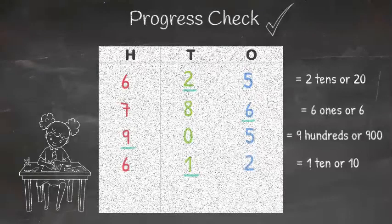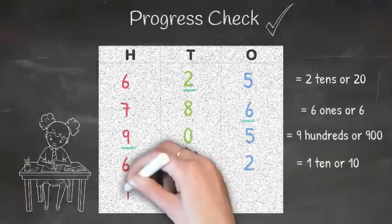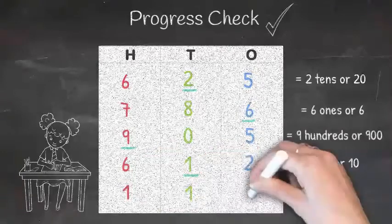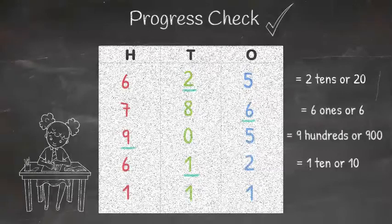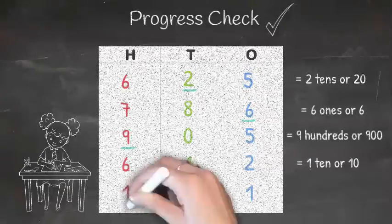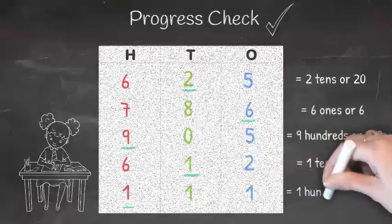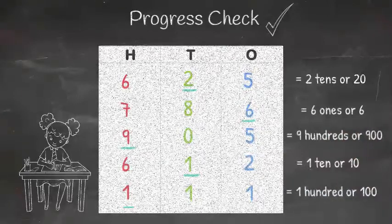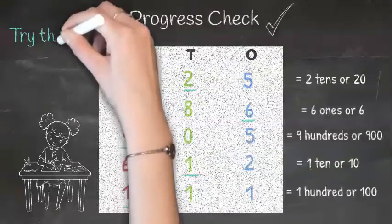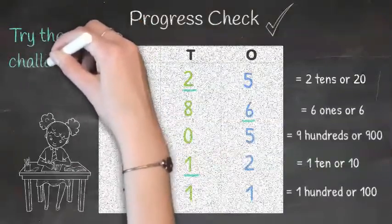And the last number we gave you was 111. So, as a challenge, try writing the value of all the other digits that are not underlined, and see if you can tell us the value of each of those.